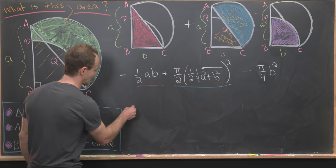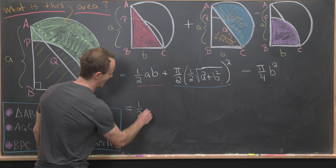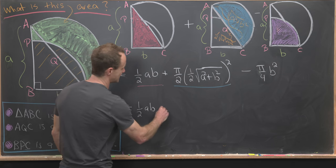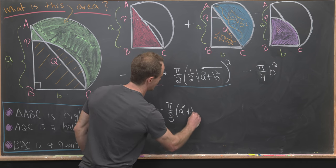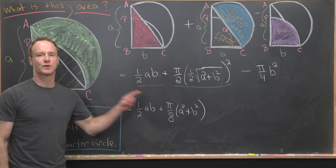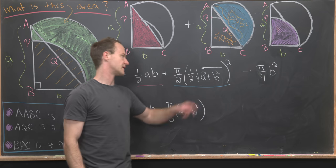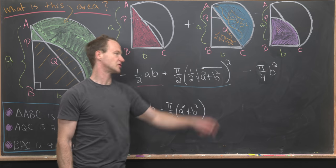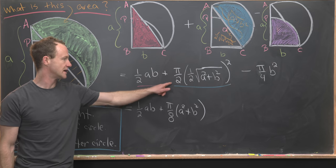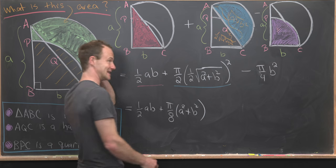So now we can finish off this calculation. Notice we have a half ab, and then this will be plus pi over eight times a squared plus b squared. The square and the square root cancel each other, and then this half in the denominator turns into a four because we square it, gets multiplied by this two to give it an eight.